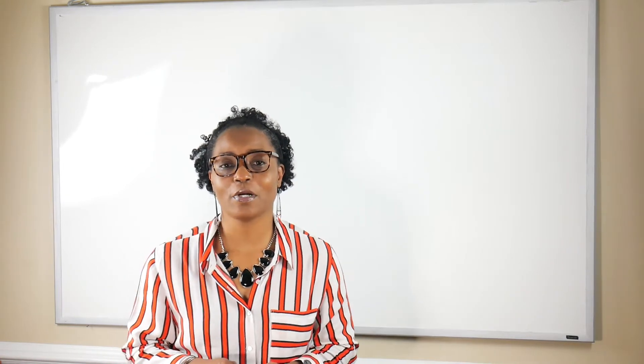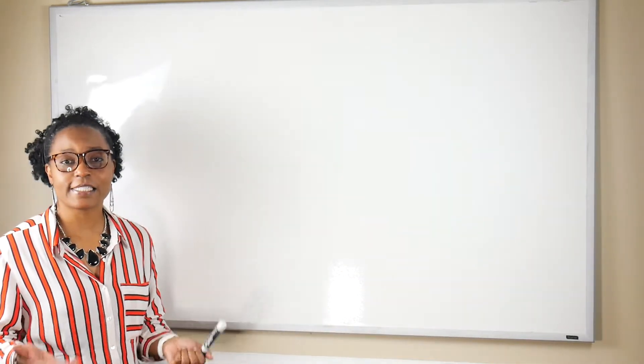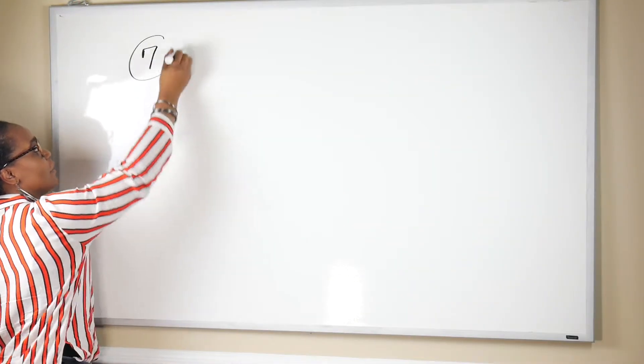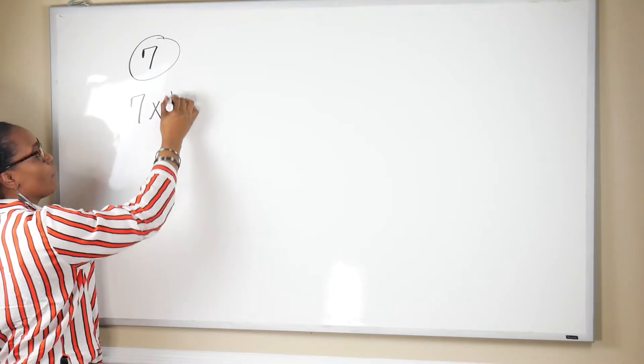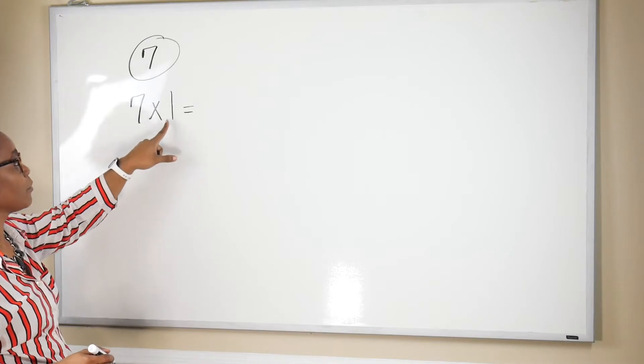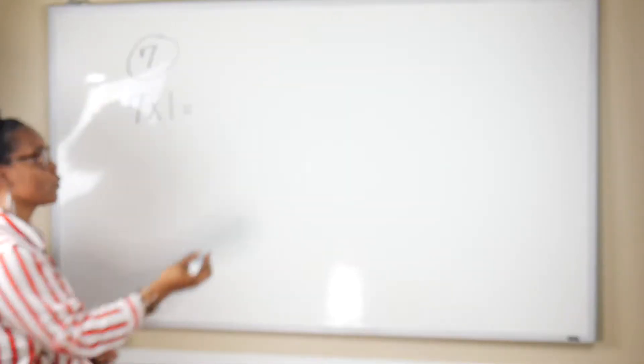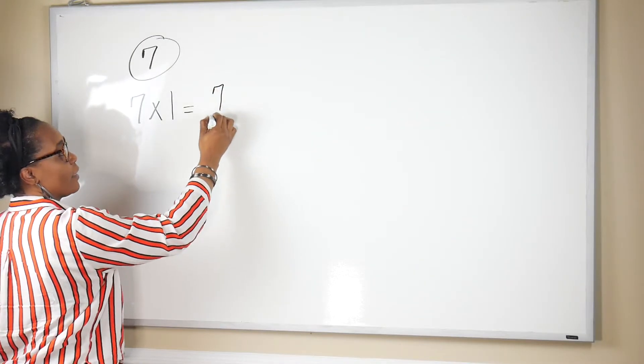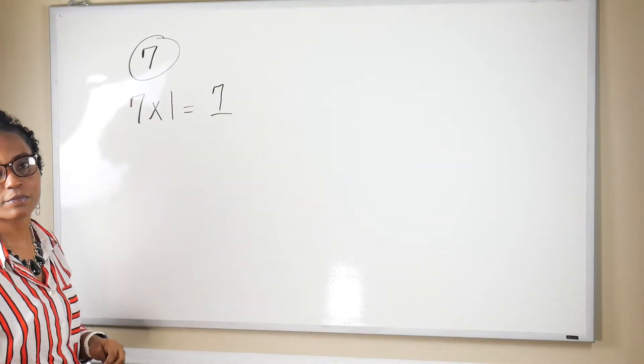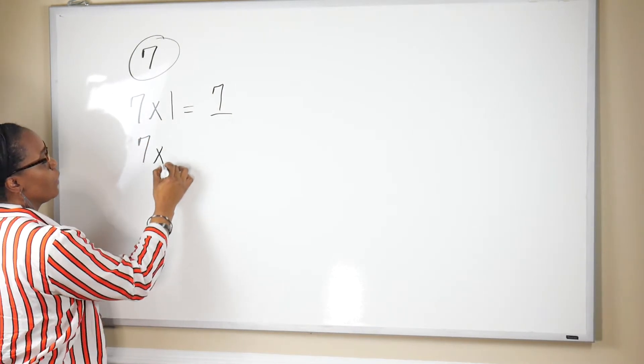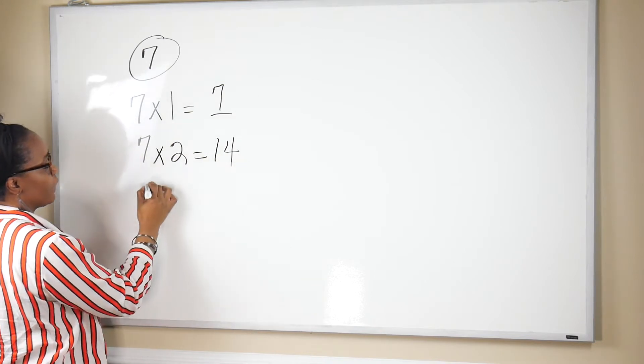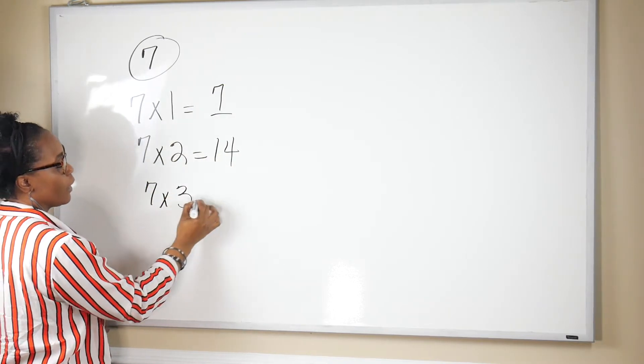For example, let's find the multiples of seven. To find the multiples of seven, we're going to multiply the given number, which is seven, times one. Seven times one is seven. Therefore, seven is a multiple of seven. If we multiply seven times two, we get 14. If we multiply seven times three, we get 21.